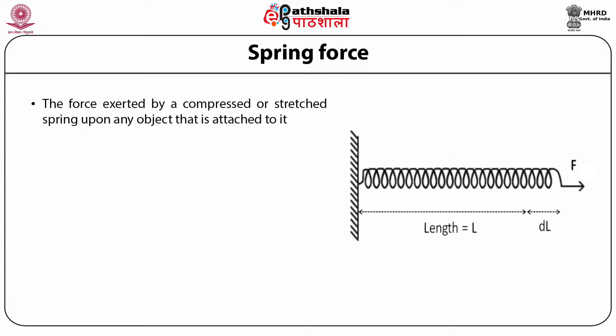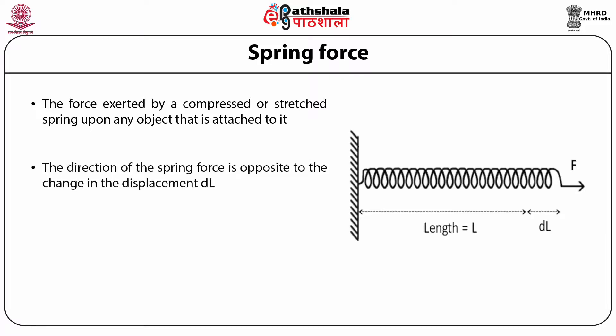Spring force is exerted by a compressed or stretched spring upon any object attached to it. In this example, a spring fixed at one end is pulled with force F at the other end. The original length of the spring was L, and the increase in length due to pulling is ΔL. The spring force developed is opposite to the pulling force and equals the spring constant K times the change in length ΔL, where K is a property of the spring material.